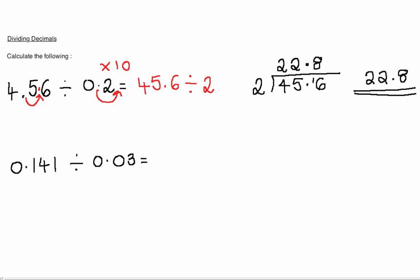In this second example, we must do the same thing. Again, we cannot have the divisor being a decimal, so we must now multiply by 100. This makes the second number a 3.